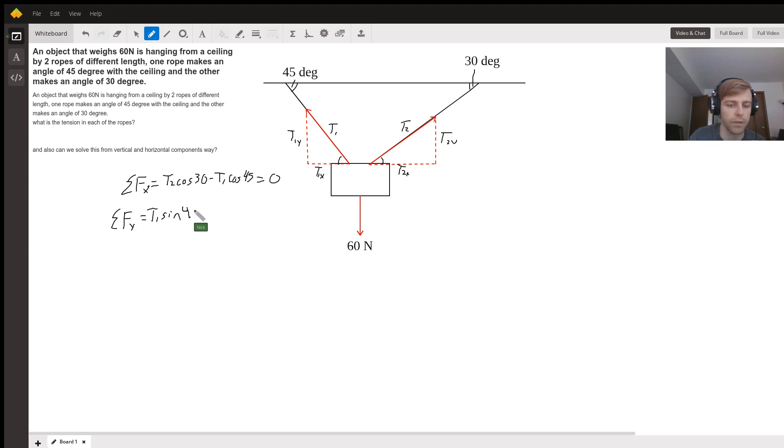sine 45, plus T2 sine 30, minus the 60 newtons because we have that downward force occurring. So then you have T2 cosine 30 minus T1 cosine 45 equals zero, T1 sine 45 plus T2 sine 30 minus 60 equals zero.